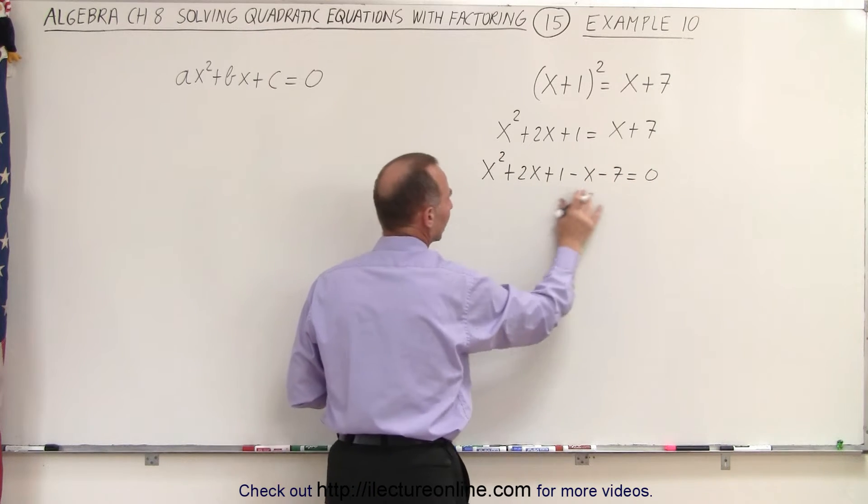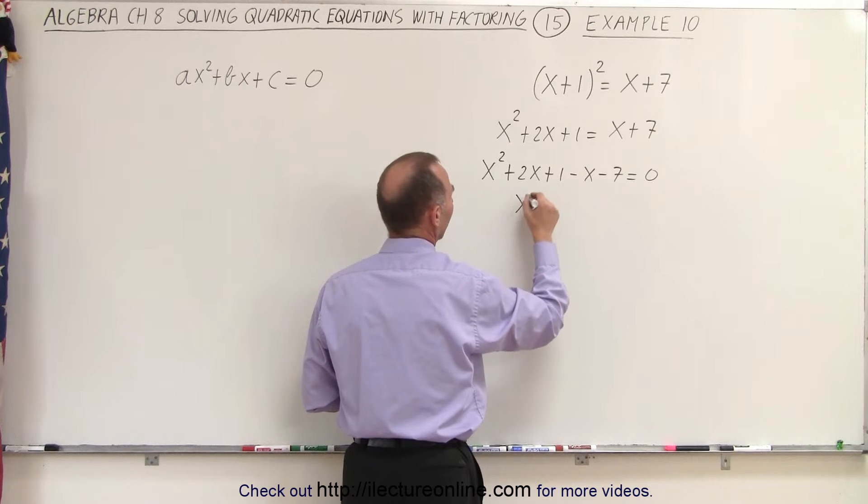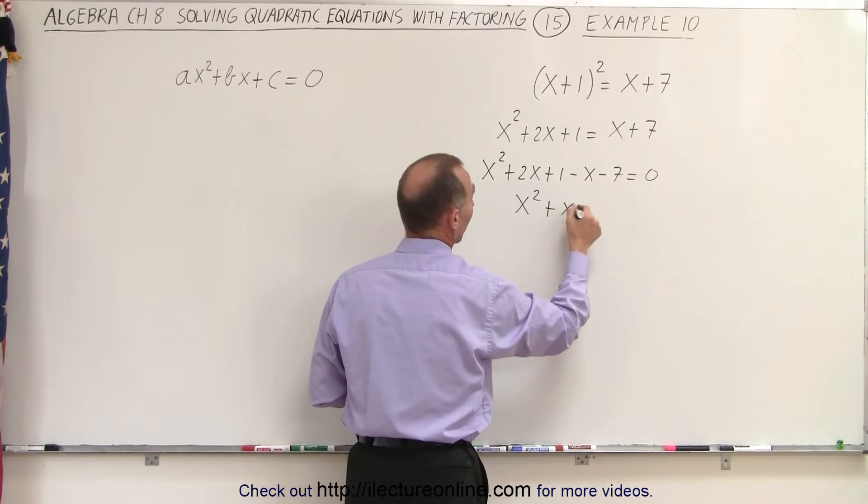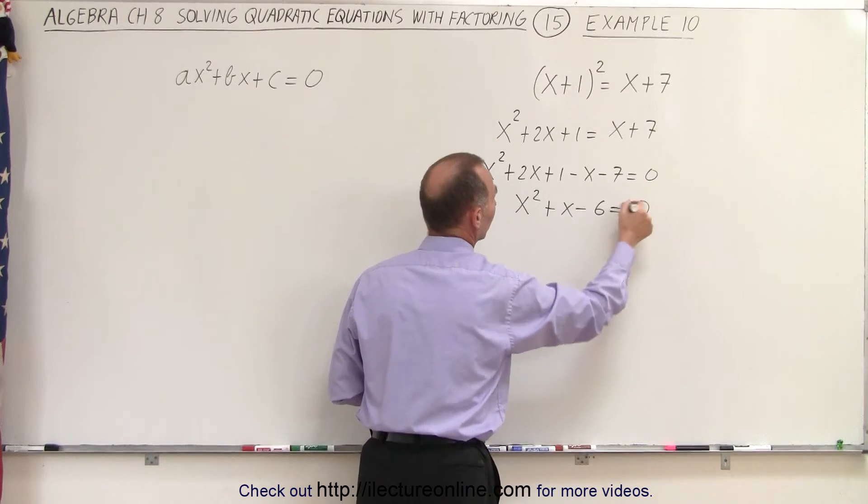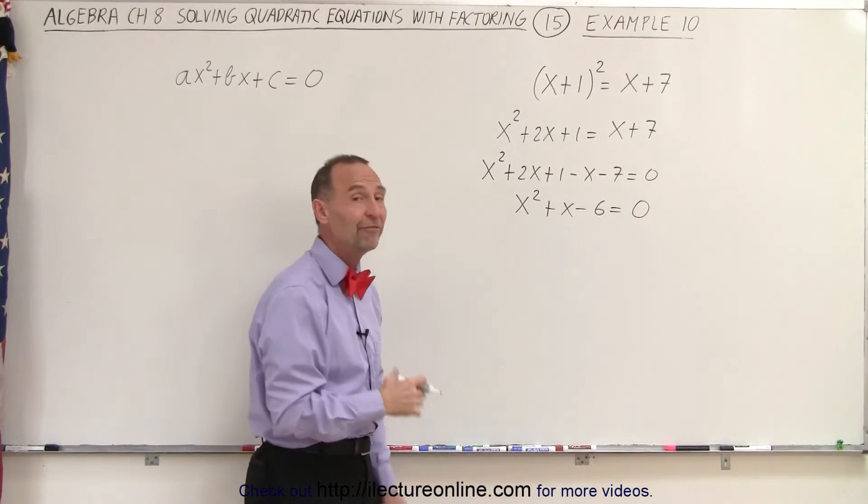And then when we combine like terms this gives us x squared plus x minus 6 equals 0. And now we can go ahead and factor that.